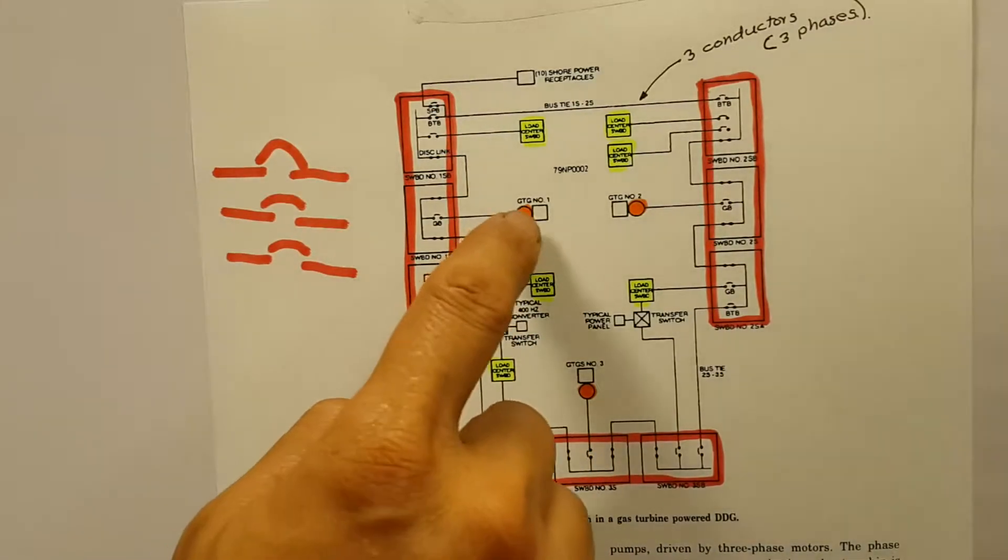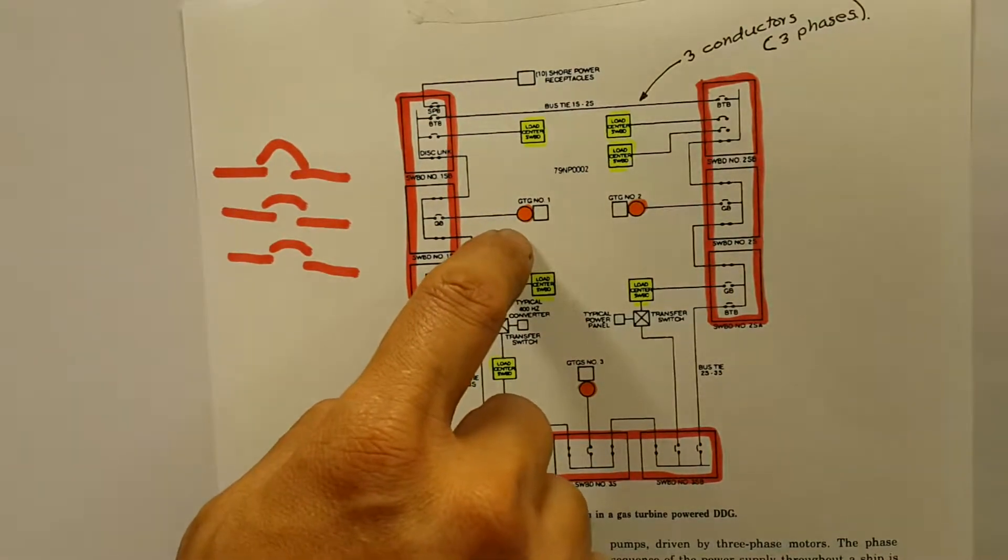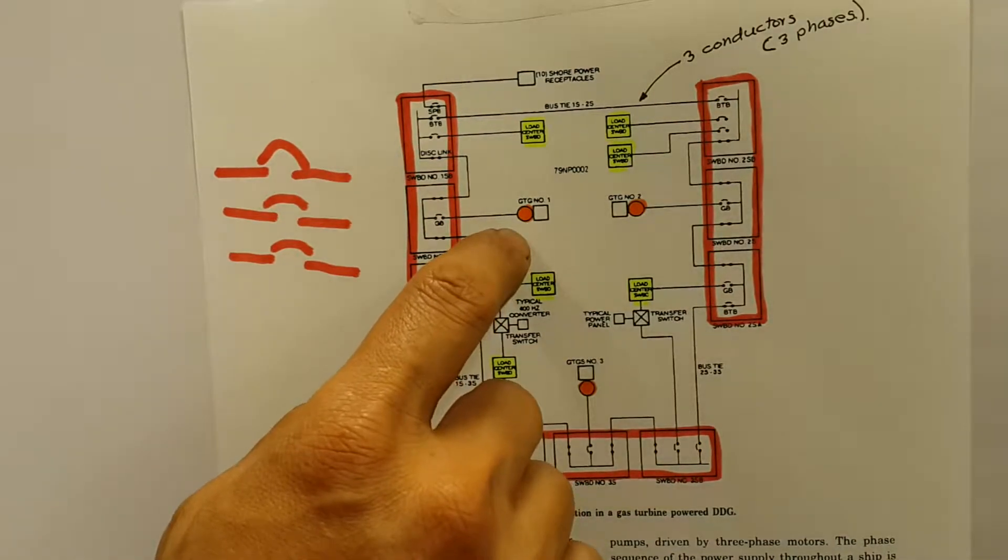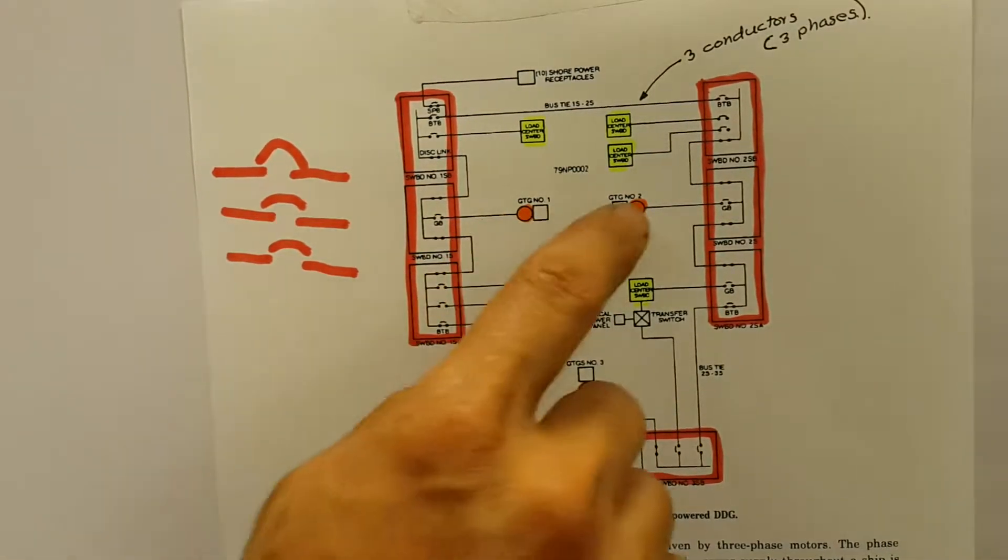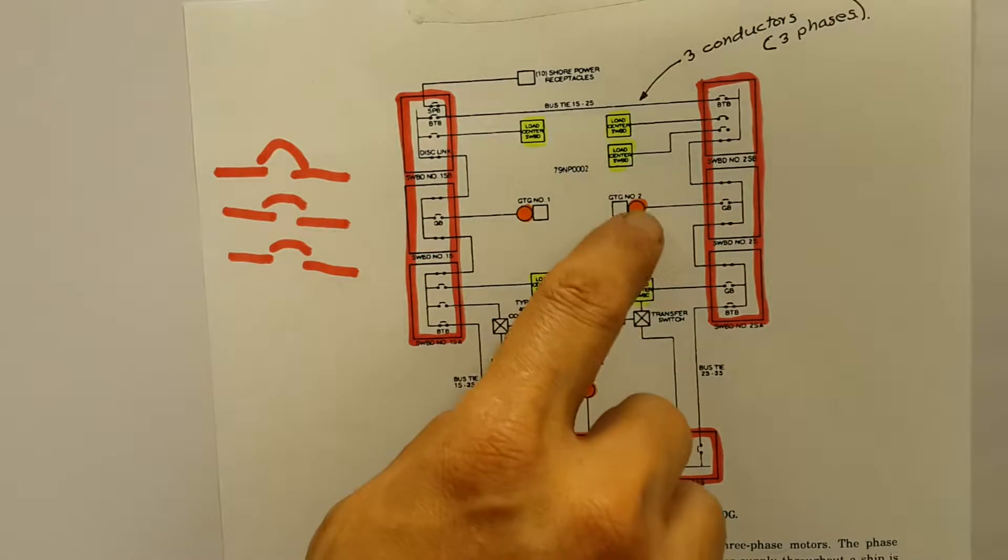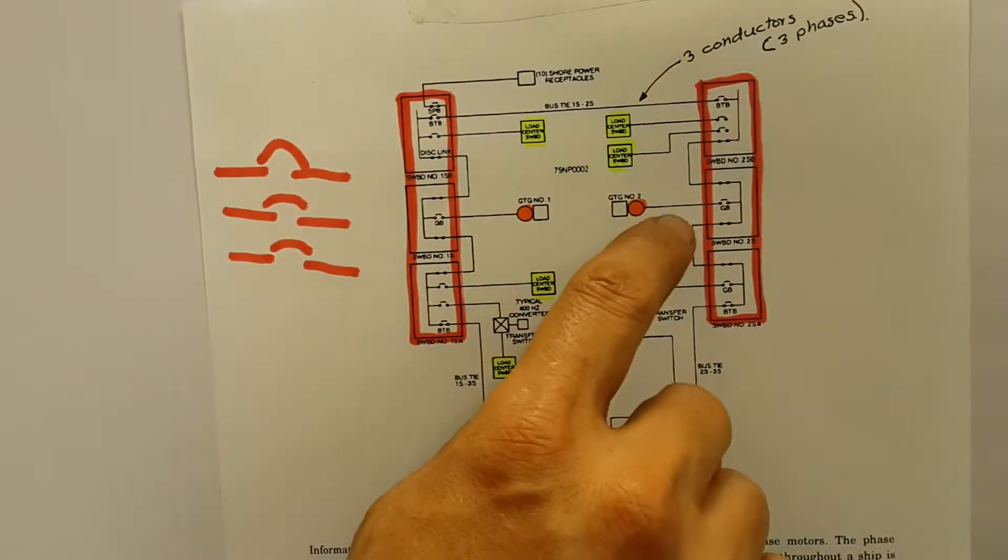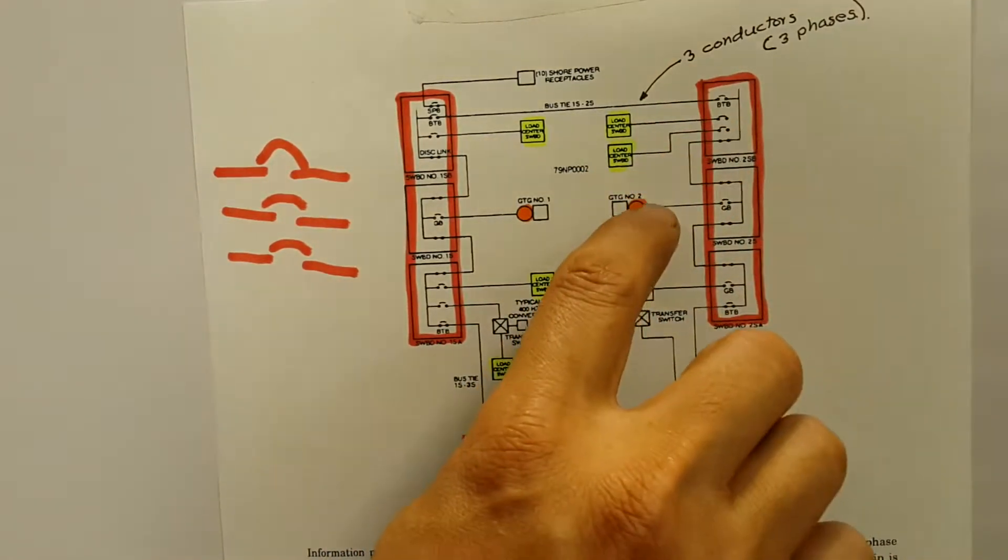As I said before, three-phase power gets created on the generators. I got three generators over here represented in orange. Power goes through three conductors represented by one line.